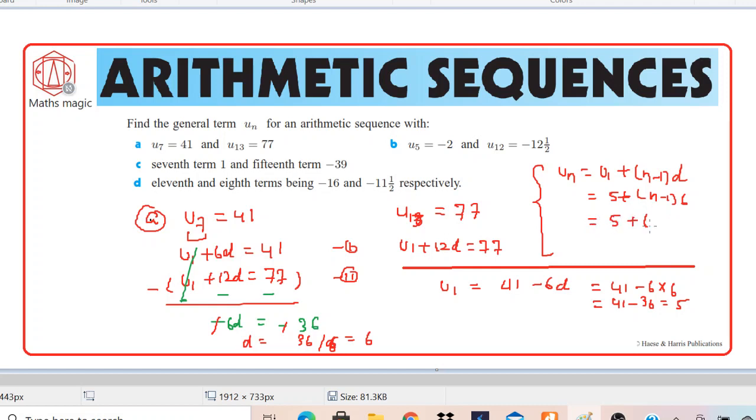Either you can leave it here or better you simplify. So 5, 6n, and minus 6, so it becomes 6n minus 1. So this is what we got, the general form of this particular equation.